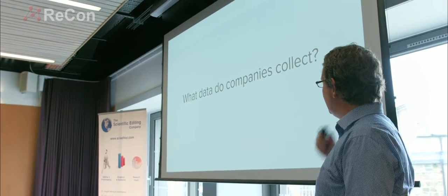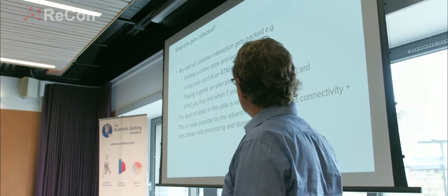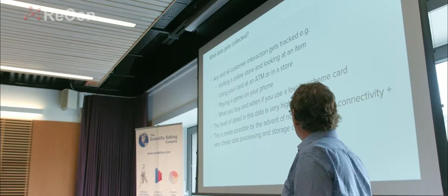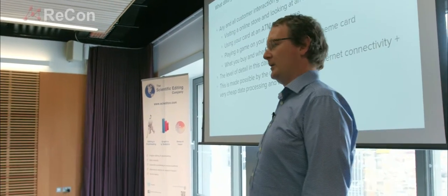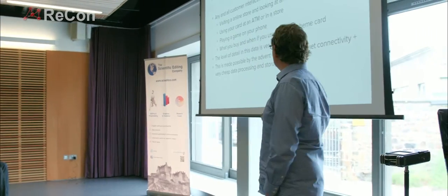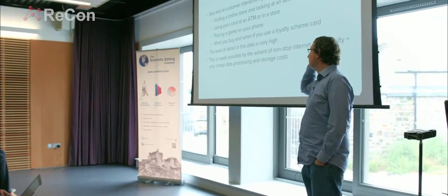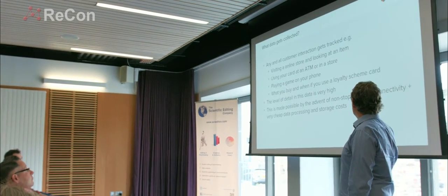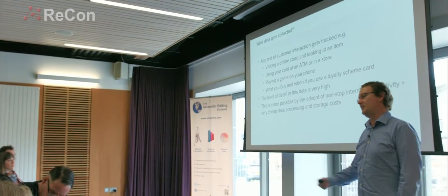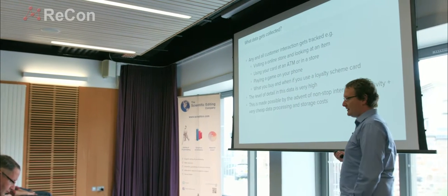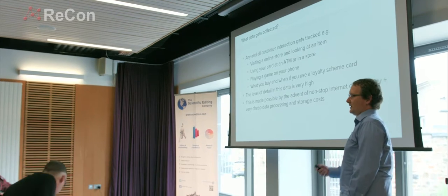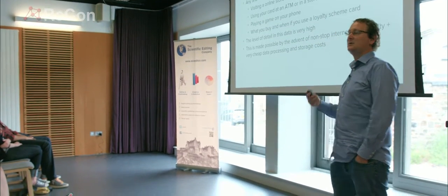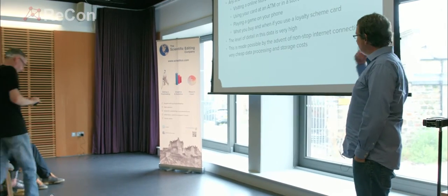So what do companies collect? Basically any type of business that has consumers — whether it's a bank, a supermarket, a game, or a mobile app — everything you do will be tracked. If you go on Amazon and click an item, that's tracked. If you use your card at an ATM, that's tracked. If you play a game on your phone, that's tracked. If you use a loyalty card like a Clubcard or Sainsbury's card, that information gets tracked. The level of detail is extremely high — not just that you used your card, but how much you withdrew, what time of day it was, what category of item, your location.